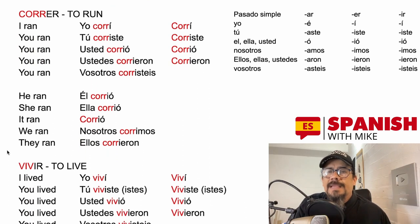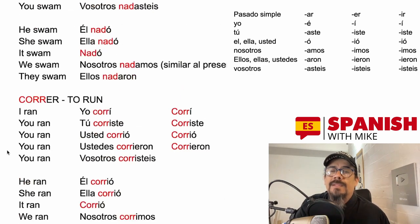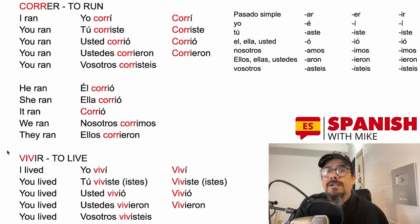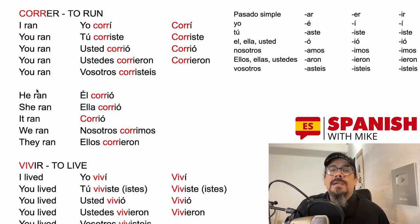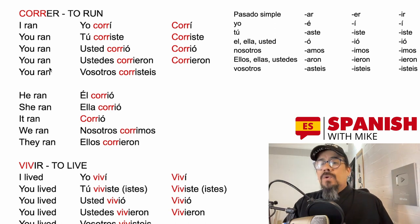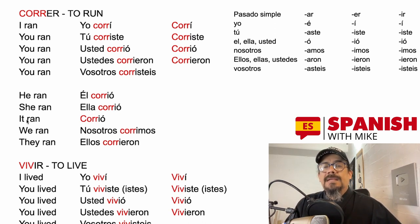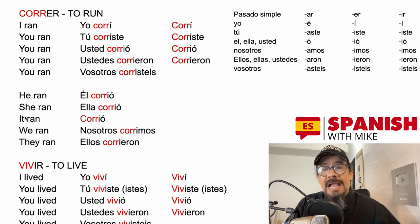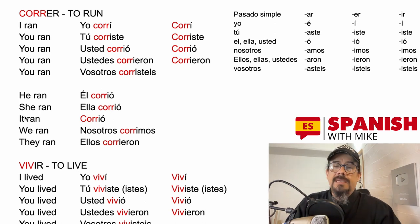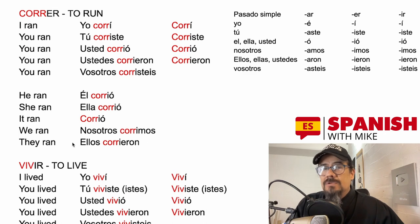Let's go to correr — a regular verb ending in -er — for the pretérito indefinido. I ran = yo corrí. You ran = tú corriste (informal). Usted corrió (formal). Ustedes corrieron (plural). Vosotros corristeis, if in Spain. He ran = él corrió. She ran = ella corrió. It ran = corrió. Remember, in Spanish we skip the subject, and especially for 'it' we never mention a pronoun. We ran = nosotros corrimos. They ran = ellos corrían.